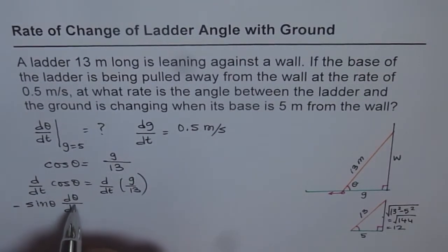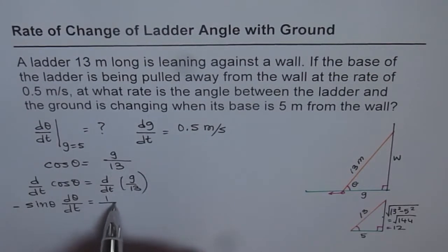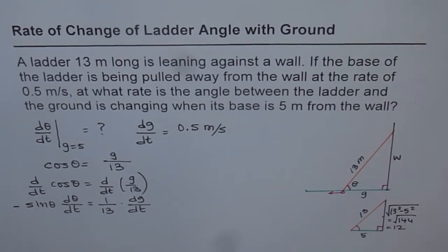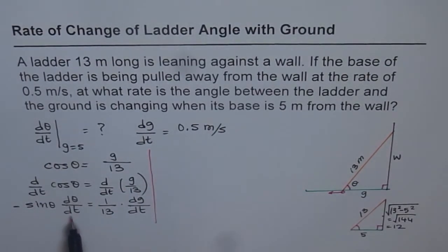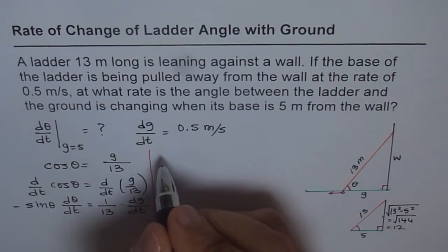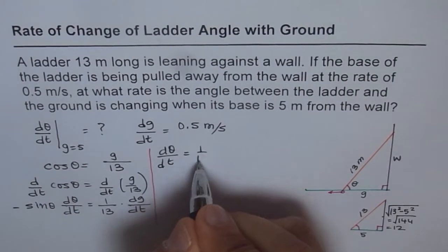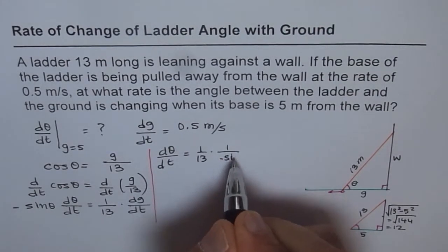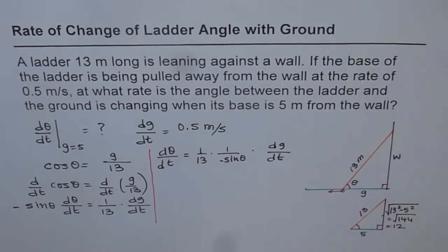Applying the chain rule, we get: −sin θ · dθ/dt = (1/13) · dg/dt. From here we can very easily find the rate of change of angle theta. So we write dθ/dt = (1/13) × (1/−sin θ) × dg/dt.